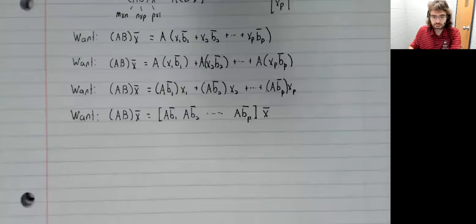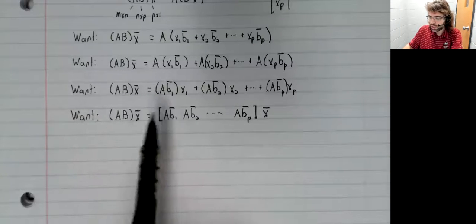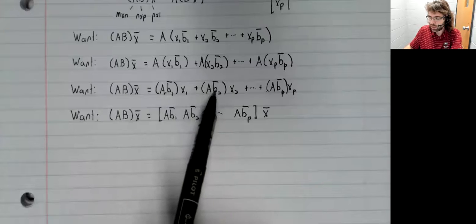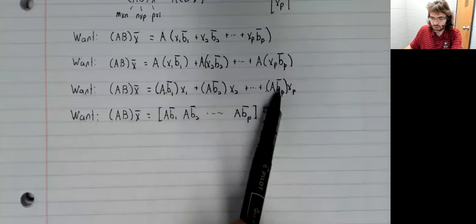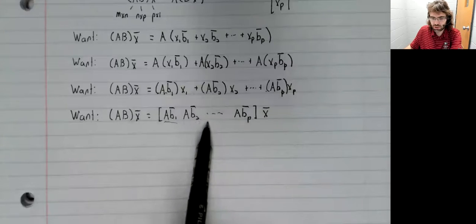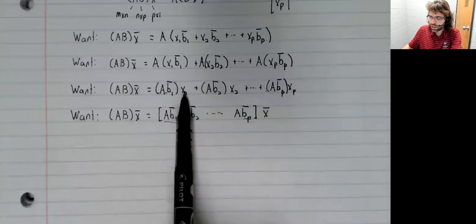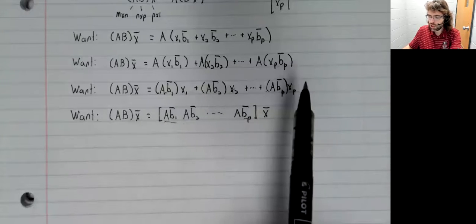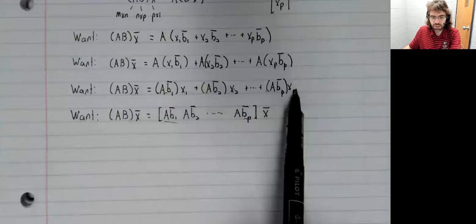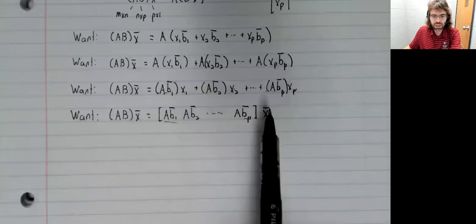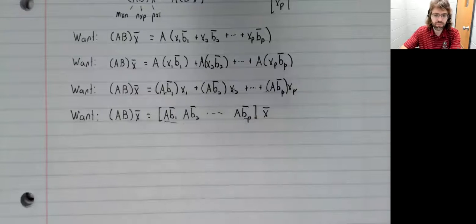In particular, the matrix whose columns are these vectors. So this matrix times the vector X one, X two, up to X P, which is just X.